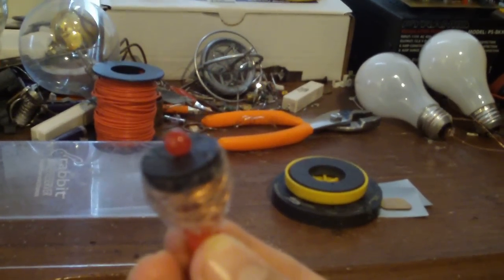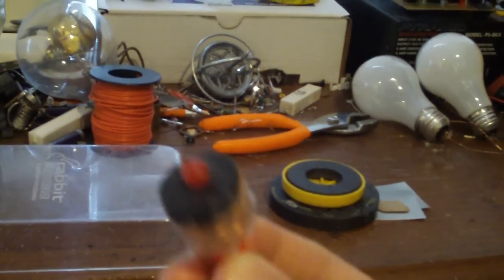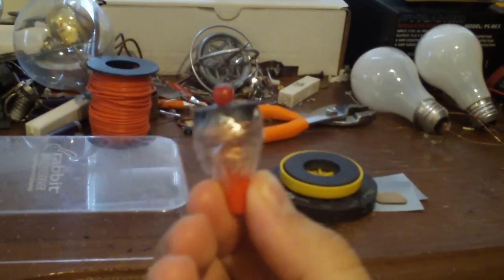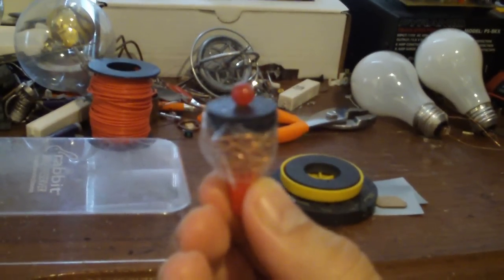And it's just a regular ferrite magnet, something you put on your fridge. And then the ball is just a little plastic ball I found actually from a piece of jewelry or something.